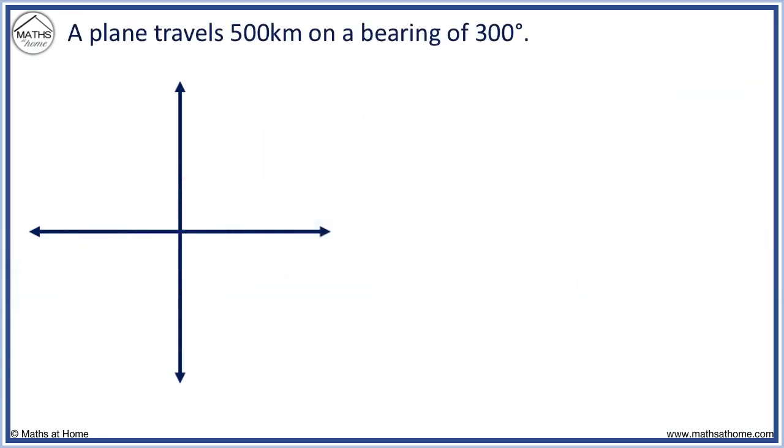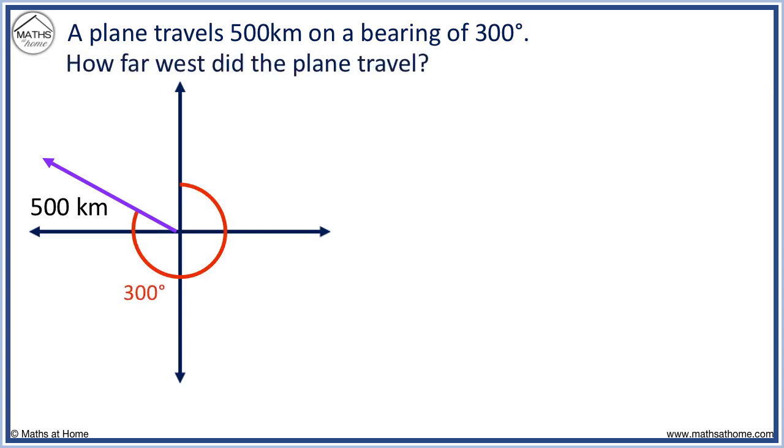A plane travels 500 kilometers on a bearing of 300 degrees. Here is a diagram. How far west did the plane travel? We make a right-angled triangle.